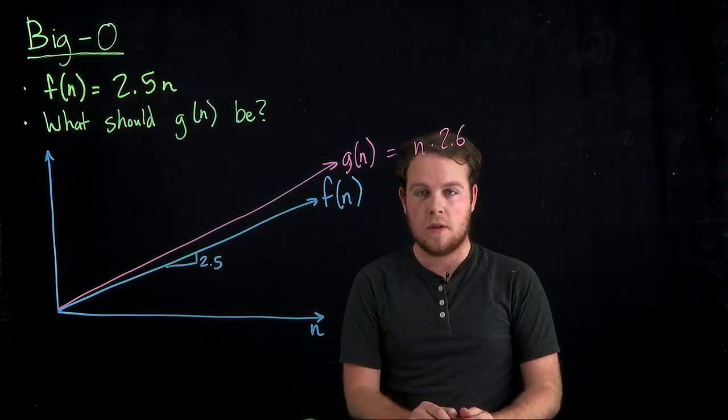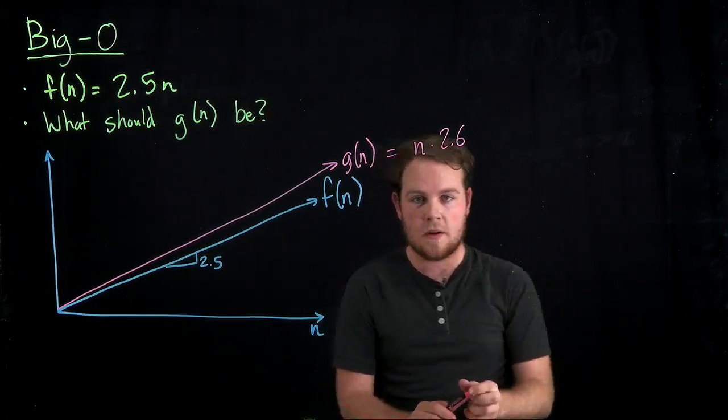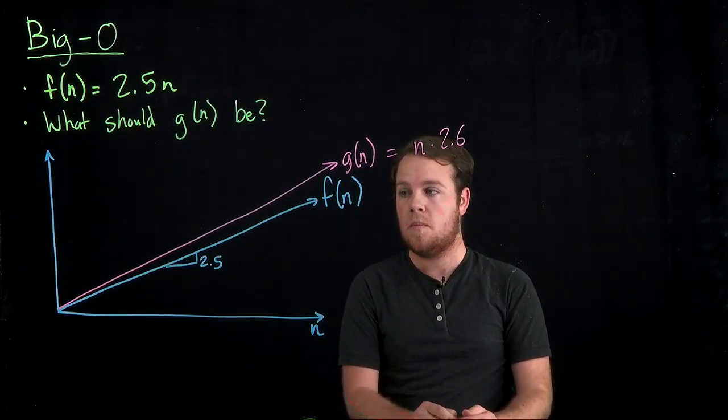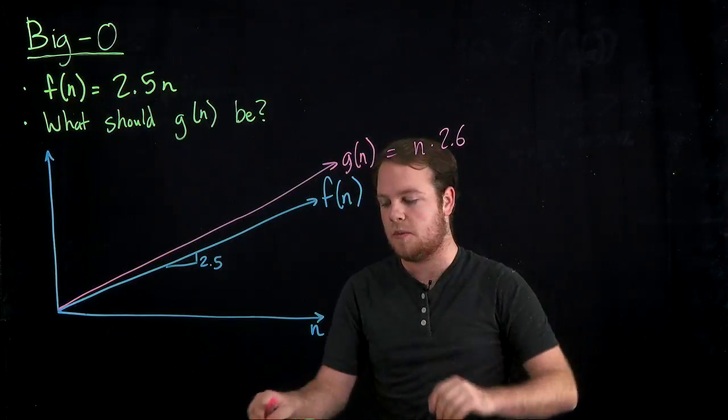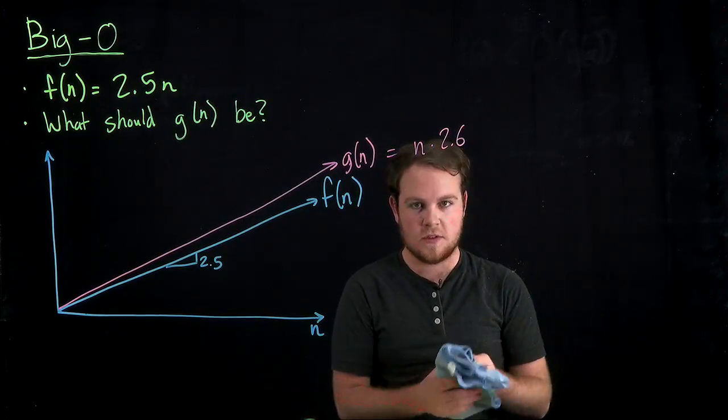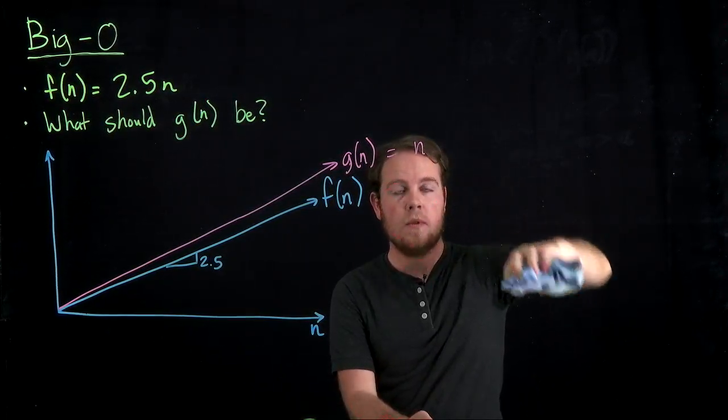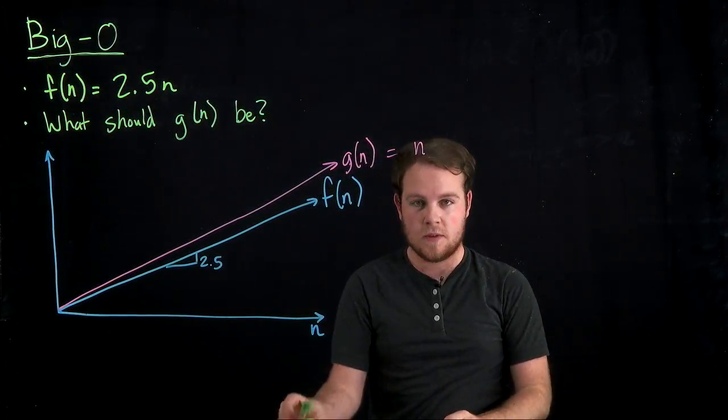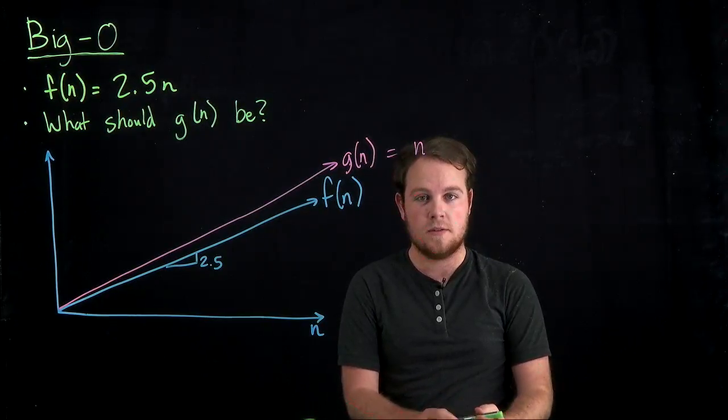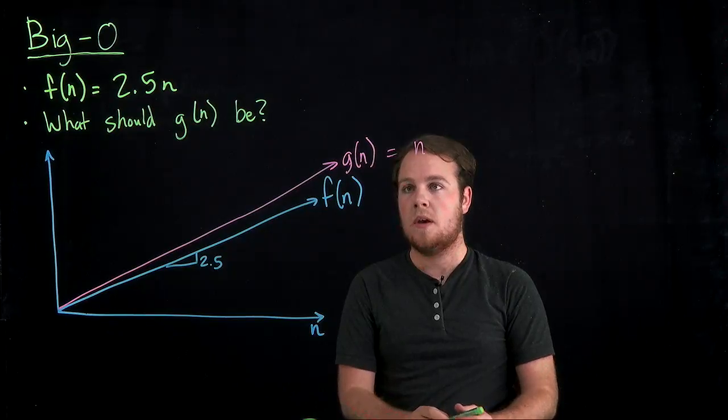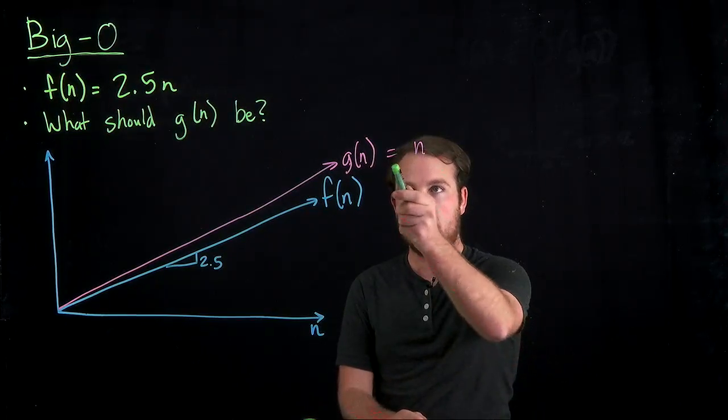For big O notation, though, the constant multiplier doesn't matter. You don't need to solve for it because it's unnecessary information. Because when we're talking about efficiencies of algorithms, if a problem gets solved in linear time, on different systems you may have different constant multipliers because some systems are faster than other systems. So we leave it out and make it general and just call it g of n.